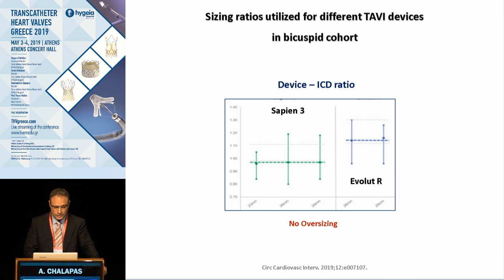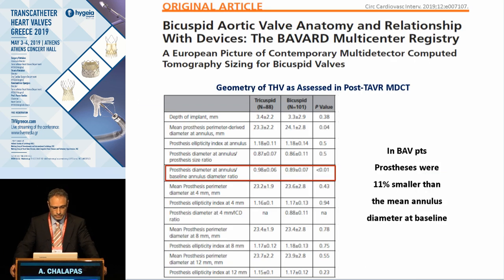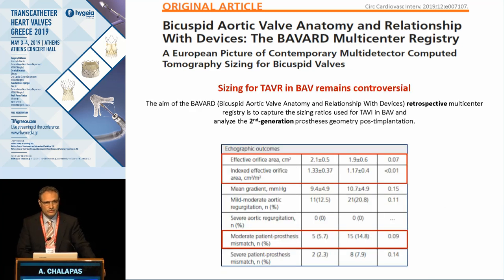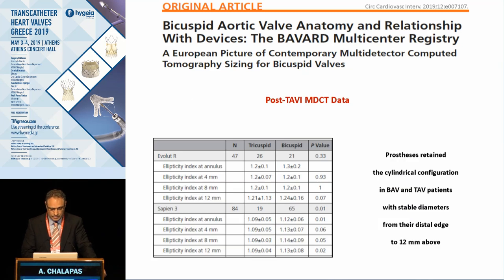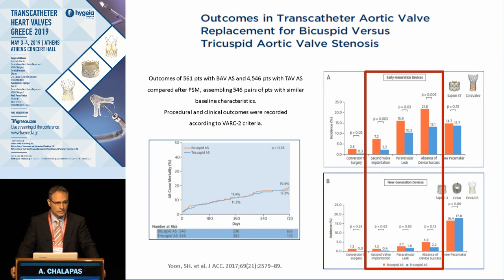According to post-TAVR CT data, the prostheses used in this population were almost 10% smaller than the mean annulus diameter at baseline. Echocardiographic data have shown that the effective orifice area is smaller in the bicuspid population, and there is a high risk of prosthesis-patient mismatch. However, interestingly, new-generation valves have shown they retain cylindrical configuration in this population, which reflects better results with fewer complications and less need for a second valve.